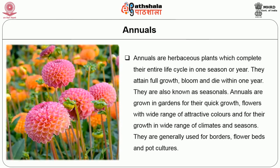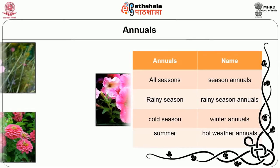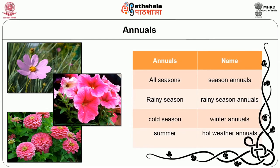Annuals are herbaceous plants which complete their entire life cycle in one season or year. They attain full growth, bloom and die within one year, and are also known as seasonals. Annuals are grown in gardens for their quick growth, flowers with a wide range of attractive colours, and their ability to grow in a wide range of climates and seasons. They are generally used for borders, flower beds and pot culture. Some annuals withstand all seasonal variations and grow throughout the year — they are known as all-season annuals; examples include cosmos, petunia and zinnia.